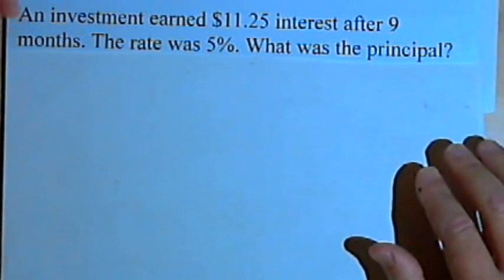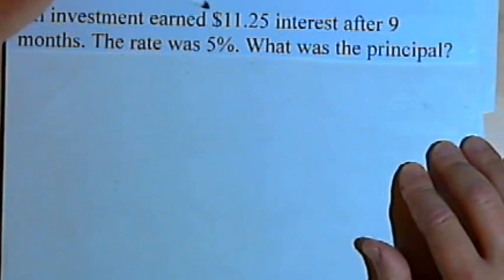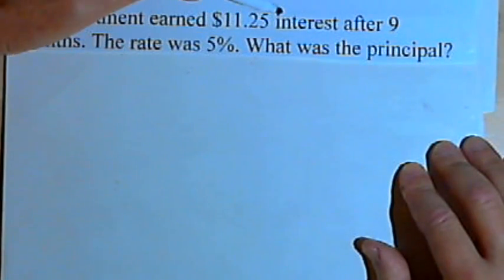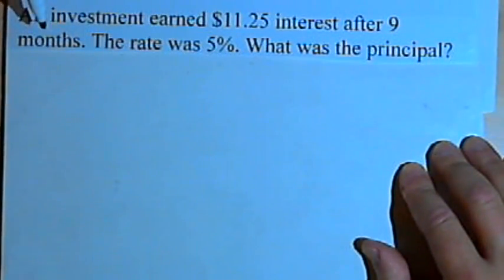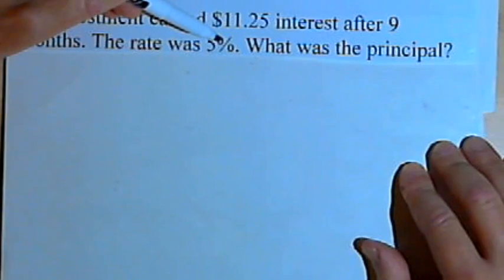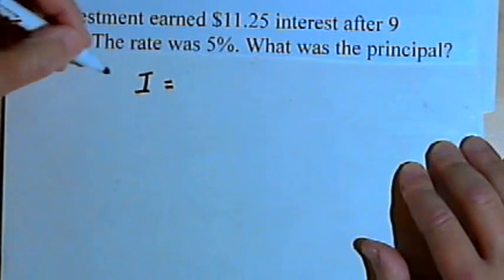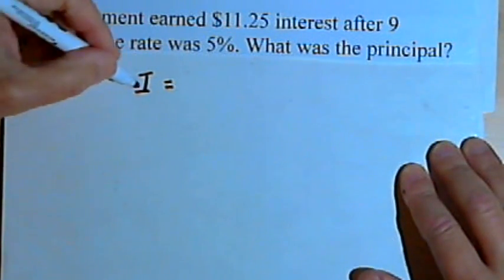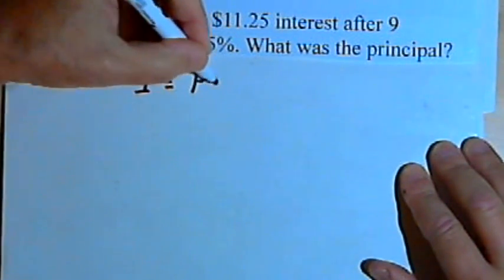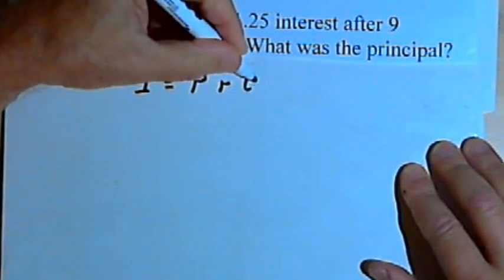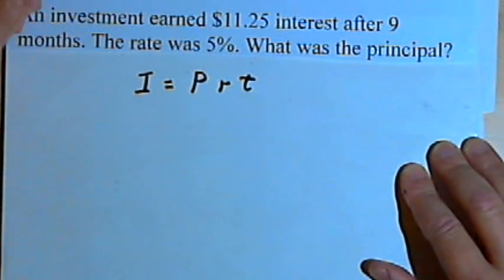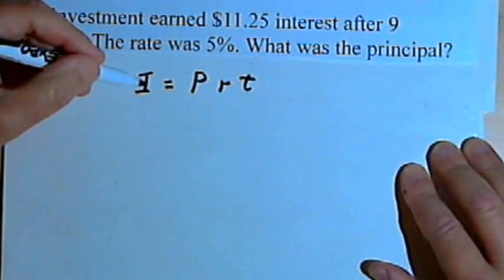Here's the first problem. An investment earned $11.25 interest after nine months. The rate was 5%. What was the principal? We're going to start out with the basic formula for simple interest: interest equals the principal times the rate times the time. And we'll fill in whatever we know about this problem.